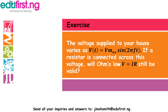Let's try this exercise: the voltage supplied to your house varies as V(t) = V_max × sin(2πft). If a resistor is connected across this voltage, will Ohm's law (V = IR) still be valid? We are given V, so manipulate and solve accordingly. For all inquiries and answers, send to the email below: jimonsmith@eduforce.ng. Thank you very much.